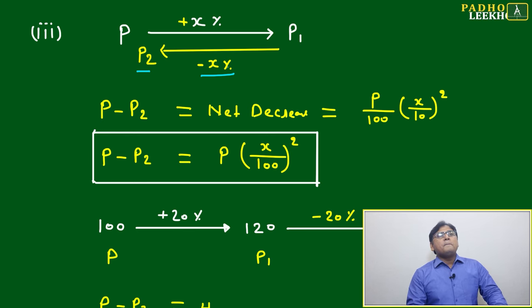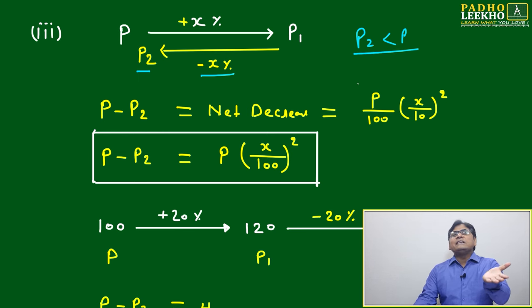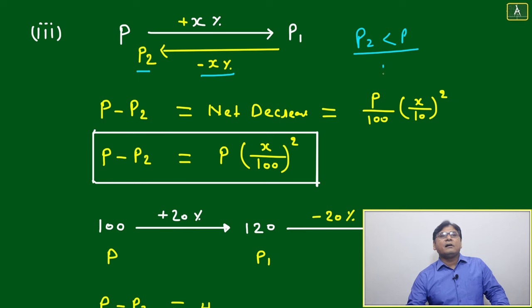That is 100 percent sure P2 will be always less than P. That is 100 percent sure. If one like 100, you increase by 10, what will happen? 100 you increased by 10, it will become 110.